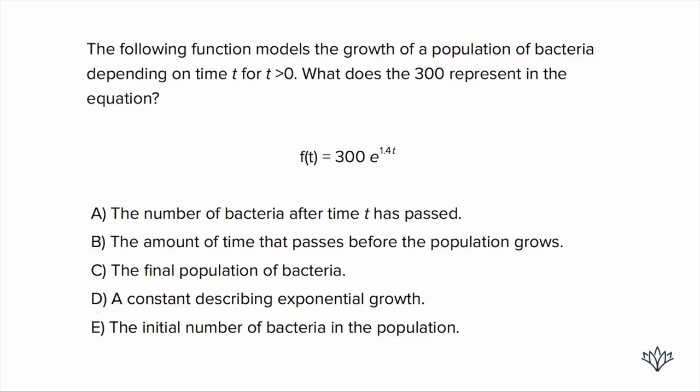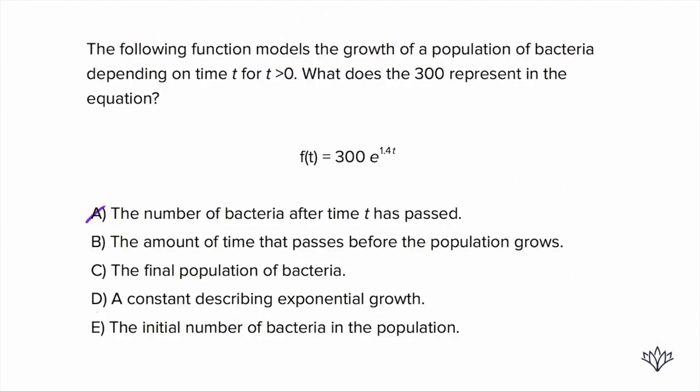So let's take a look at the answer choices. Answer choice A, the number of bacteria after time t has passed. No, that's what the whole function is supposed to give us. So that would be f of t. Answer choice B, the amount of time that passes before the population grows. Again, remember, t represents the amount of time. So that's not going to work.